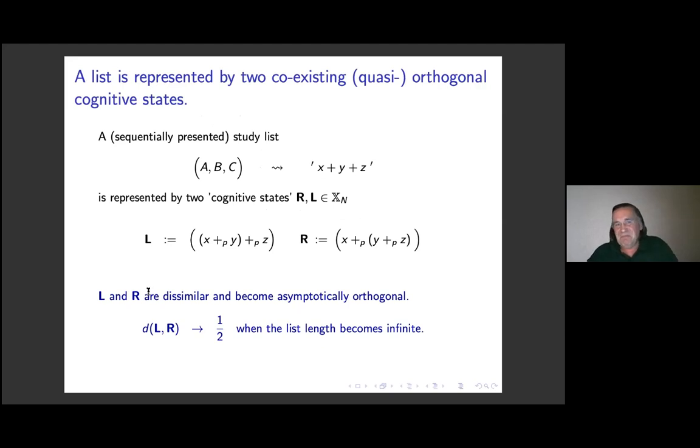A very tiny example where you are faced with this kind of situation is if you would memorize a start list of three items A, B, C. And of course, we would like to write this representation as a sum of representatives x, y and z. But as I told you, this is not what we are allowed to do. We have to decide where to put the brackets. Therefore, we have two, I will now call them states. One is called L, which is due to the left associativity of addition, and R, which is the right associativity of the addition.